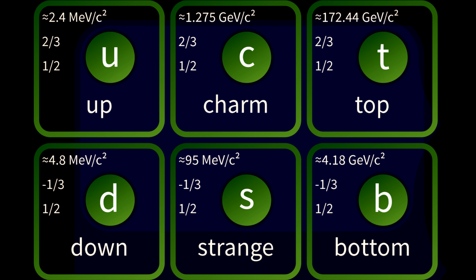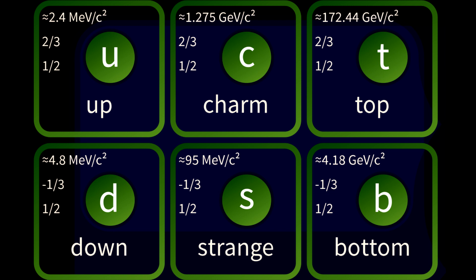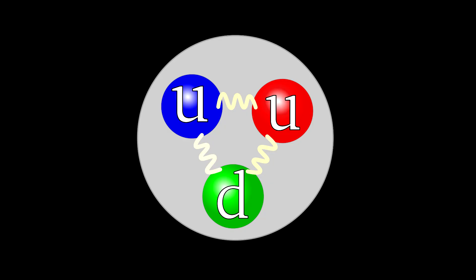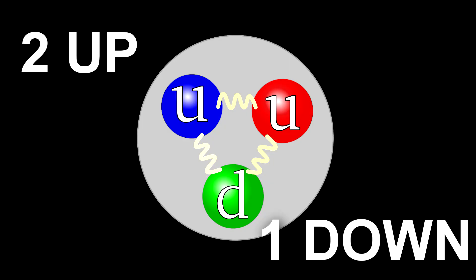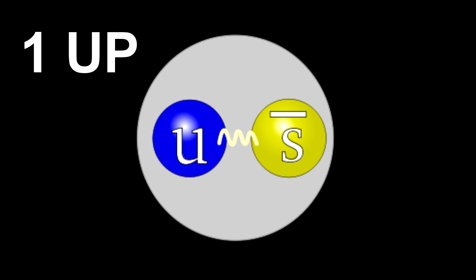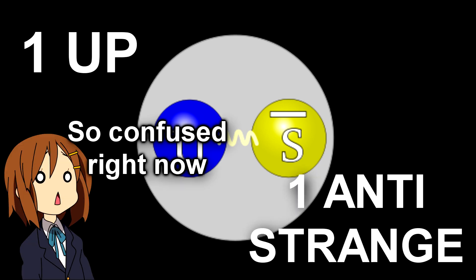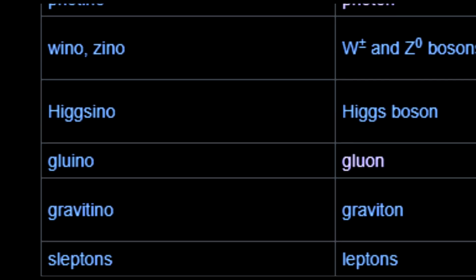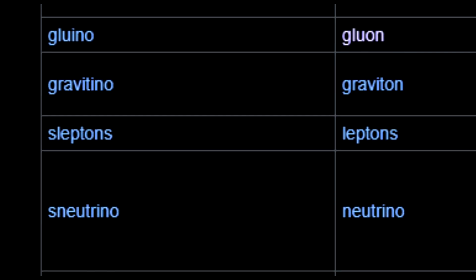Take two quarks, one normal and one antiquark, which is the antimatter counterpart of the quark, and you make a meson. Take three quarks and you have yourself a baryon. Baryons and mesons are called hadrons. Examples include the proton, a baryon made out of two up quarks and one down quark, and a kaon, a meson made out of one up quark and one anti-strange quark. There's a whole list of possible combinations for baryonic and mesonic hadron particles, which I will link in the description.